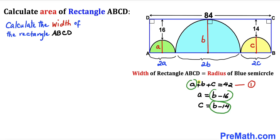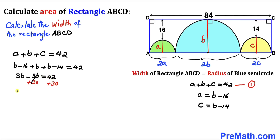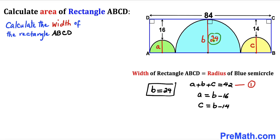Now we plug a equals b minus 16 and c equals b minus 14 into equation 1: (b minus 16) plus b plus (b minus 14) equals 42. Combining like terms, 3b minus 30 equals 42. Adding 30 to both sides gives 3b equals 72, so b equals 24 units. The radius of the blue semicircle is 24 units.